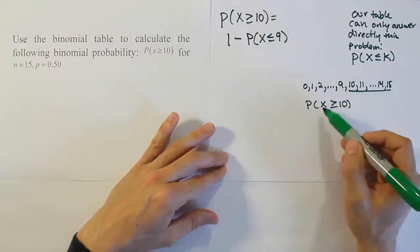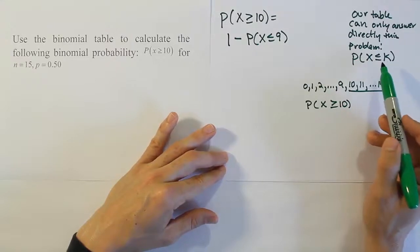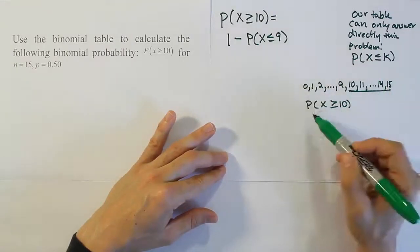If you want to do other problems, like the probability x is less than 10, remember it doesn't do less than 10. It does less than or equal to a number. So if you want to do less than 10...